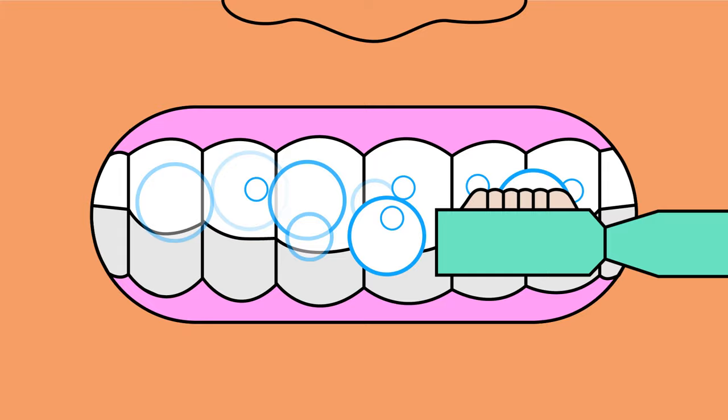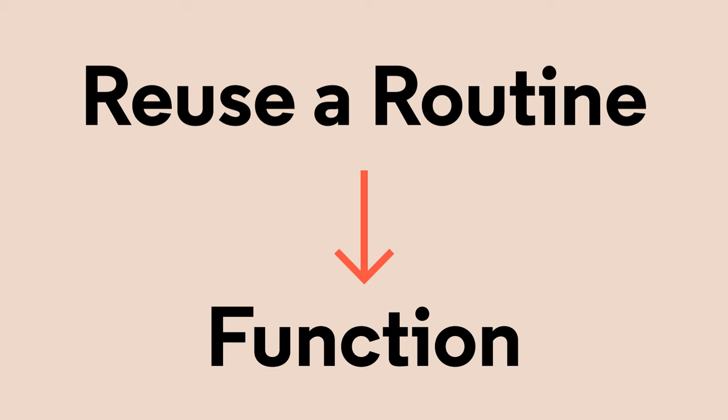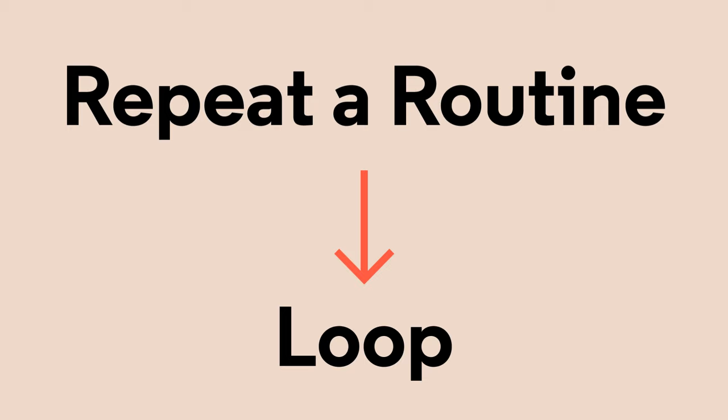In programming, when we know we're going to use a routine again, it's good practice to put that routine into a function so that we can reuse it. When we want to repeat a function or subroutine multiple times in a row, we can use loops.